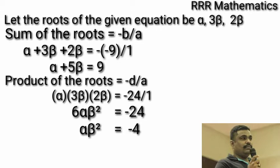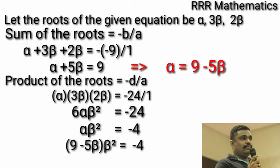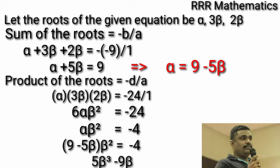From the sum of the root, alpha plus 5 beta equal to 9. I will replace my alpha as 9 minus 5 beta. Therefore, 9 minus 5 beta into beta square equal to minus 4. When you multiply, we will get 5 beta cube minus 9 beta square minus 4 equal to 0.